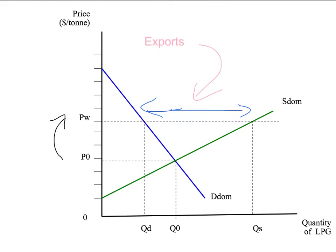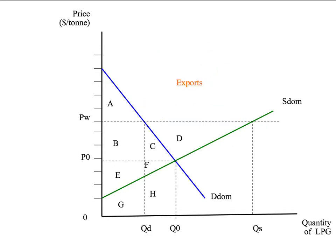But how much better off or worse off are they? We need to do some welfare economics. In particular, we want to ask: does international trade and exporting benefit the domestic country overall? We start by using our standard approach in welfare economics — put in all the construction lines and then label everything that could possibly be relevant. We've labeled all the relevant areas here from A through to H.